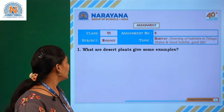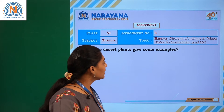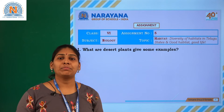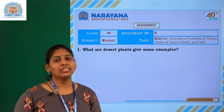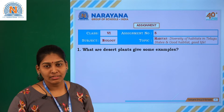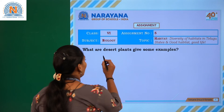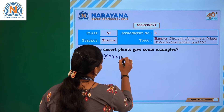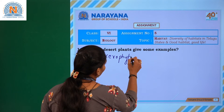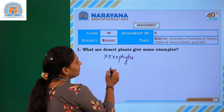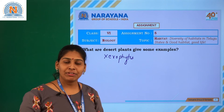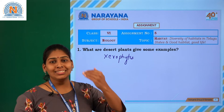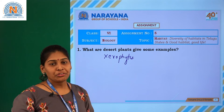The first question: what are the desert plants? Give some examples. The plants which are present in the desert we can call desert plants, otherwise we can call them xerophytes. Desert plants, or xerophytes, are adapted to the highest temperature conditions.